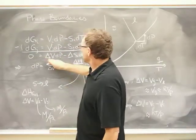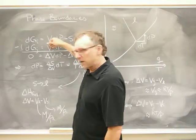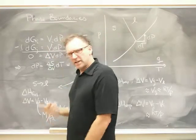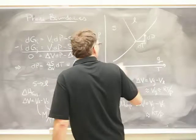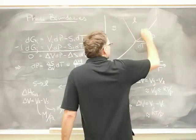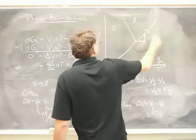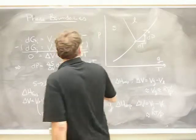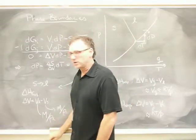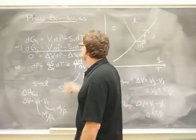I've written delta V, which is V_i minus V_j. That's the volume change upon going from, in this case, from liquid to gas or it could have been any of these other phase transitions. And same thing here.